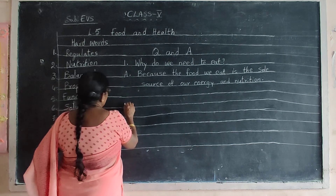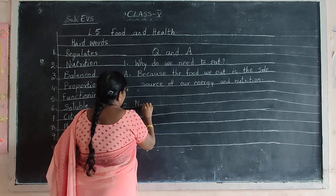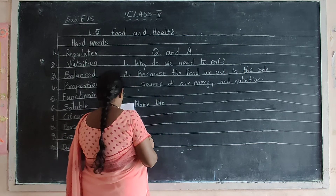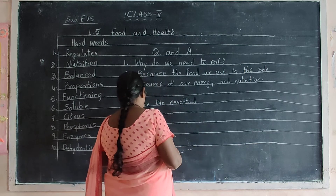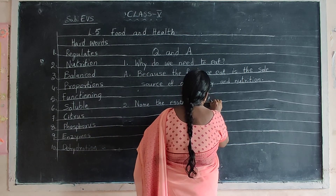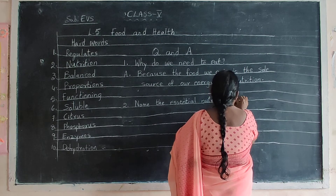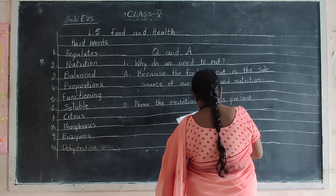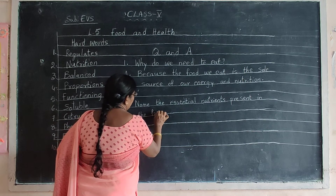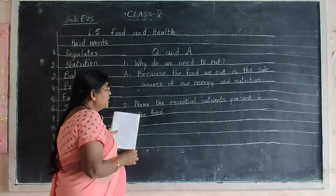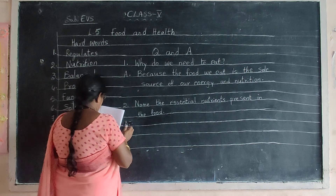Now second question. Put 2 in the margin after completing the first answer. Leave one line space and put 2 in the margin for second question. Second question: Name the essential nutrients present in the food.